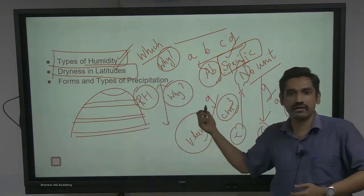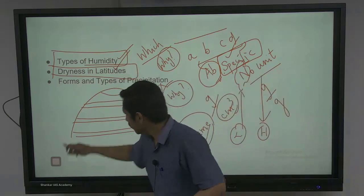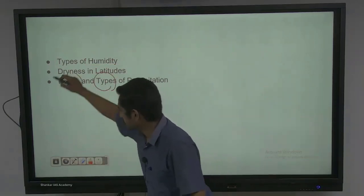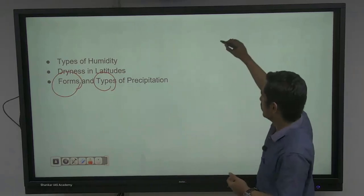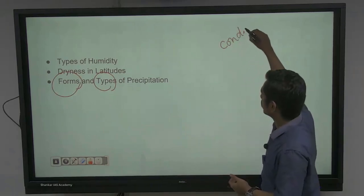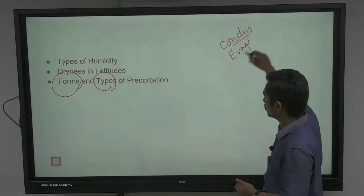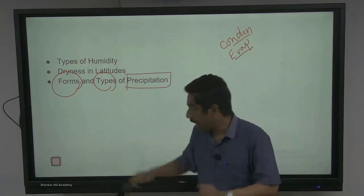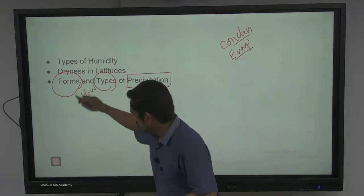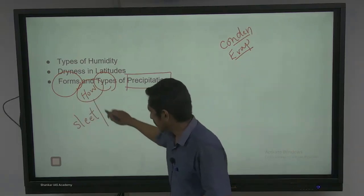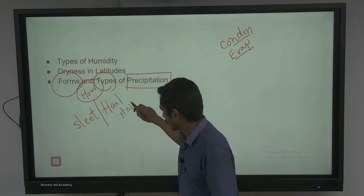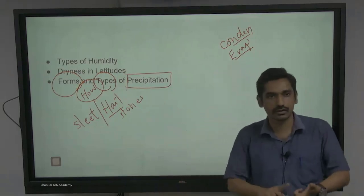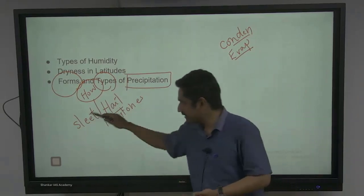Beyond this, you can talk about different forms and types of precipitation. We are talking about how sleet is different from hailstones. UPSC will not ask you 'what are the four different forms of precipitation' — everyone knows: rainfall, snowfall, sleet, and hailstones. But how exactly are sleet and hailstones different? Sleet is refrozen meltwater, and there is more stress on the process.